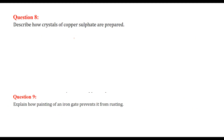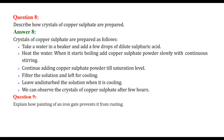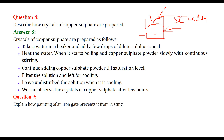Describe how crystals of copper sulfate are prepared. First, take water in a beaker and add a few drops of H₂SO₄ (sulfuric acid). Heat the water, and when it starts boiling, slowly add copper sulfate powder and continuously stir. Continue adding copper sulfate powder until the saturation level. Filter out the solution and leave it for cooling. Leave the solution undisturbed while cooling, and after a few hours, crystals of copper sulfate will be formed.